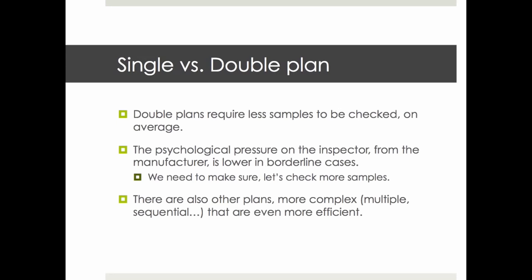Now let's talk about single versus double sampling plans. Double plans are more efficient than single plans — they require fewer samples to be checked. Another big advantage of double sampling plans is that in borderline cases, a single sampling plan creates a lot of pressure from the supplier. For example, if the limit is 10 and you find 11, there's pressure about whether it's really a defect.